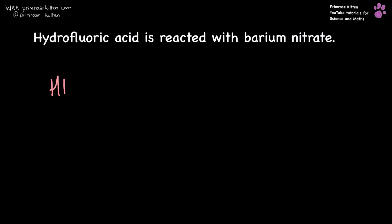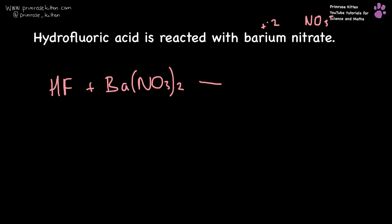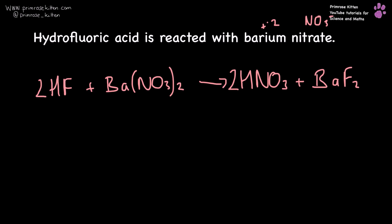Hydrofluoric acid, just like hydrochloric acid, is reacted with barium nitrate. Barium is plus two, nitrate is NO3 minus, so that is Ba(NO3)2. Then we are going to get HNO3 plus barium fluoride, BaF2. And to balance that, I need to pop a two in front of the hydrofluoric acid and a two in front of my nitric acid and I'm done.